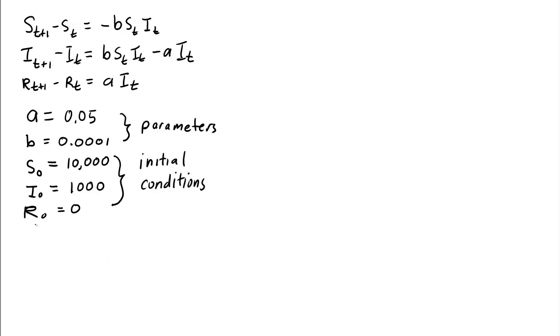The initial conditions give us the value of the state variables at time 0. And then we use these equations here, they're called difference equations, which give us the change to calculate the values of the state variables at future times. Let's see if we can do this.